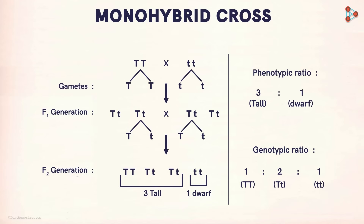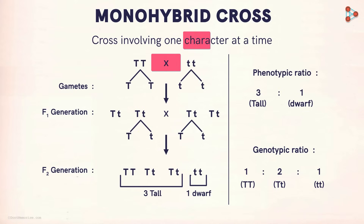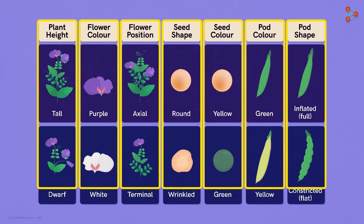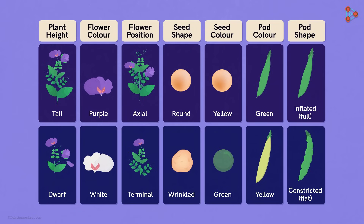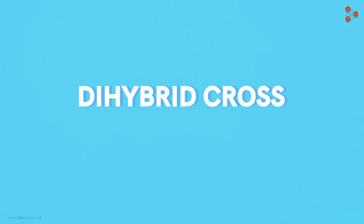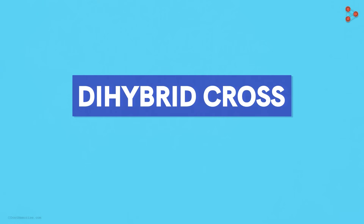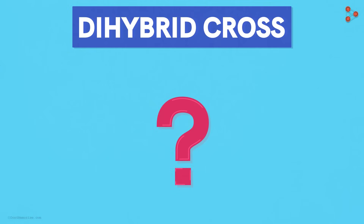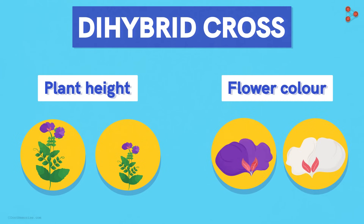Here is a representative monohybrid cross on our screen which involves only one character at a time. Do you think crossing a single character at a time was enough for Mendel to arrive at concrete conclusions? Of course not! After all, the seven pairs of contrasting characters were crossed individually. Mendel went a step ahead and crossed plants considering two characters at a time — he tried the DIHYBRID CROSS! Let's take a simple example. We have already seen a monohybrid cross for characters like plant height and flower colour individually, so let's consider these characters together to understand the DIHYBRID CROSS.